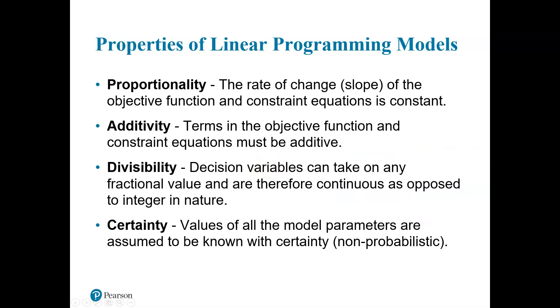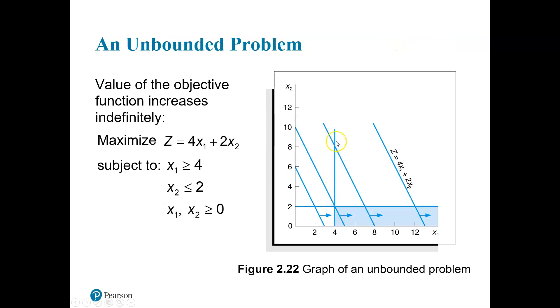There's some various properties of linear programming models. Proportionality. The rate of change of the objective function and constraint equations is constant. We can look at this, and this is what all of these lines here represent. There is no change in them. This line here is the slope of the objective function. That's why they are all equal. It's just trying to show that the objective function has a constant slope.